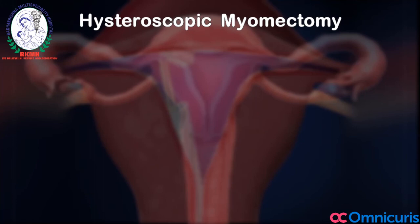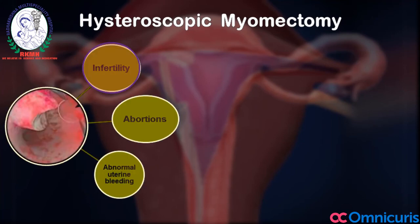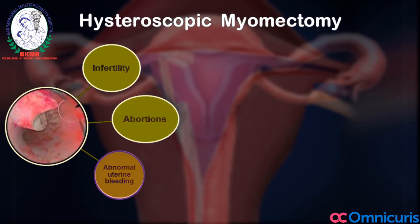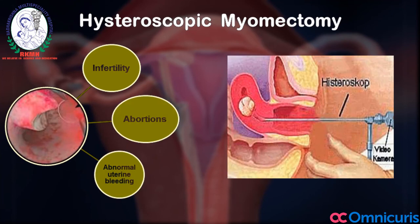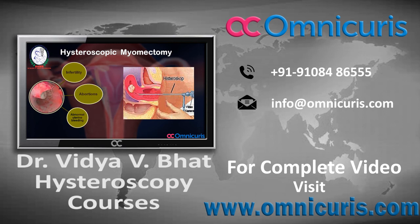What are the problems caused that lead to hysteroscopic myomectomy? Infertility, abortions, and abnormal uterine bleeding. In all age groups, the myoma can cause infertility, it can cause the woman to abort, and it can cause uncontrolled uterine bleeding.